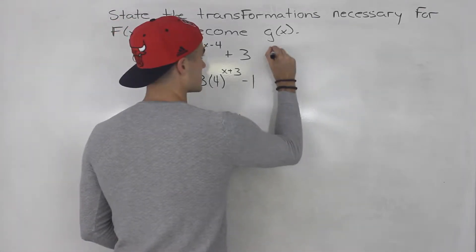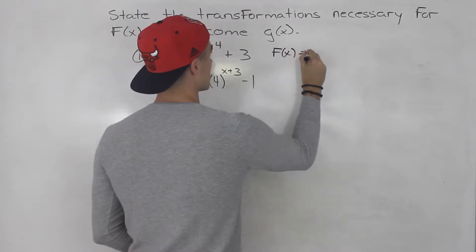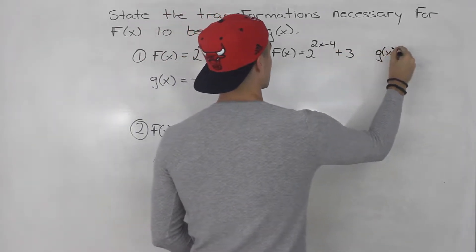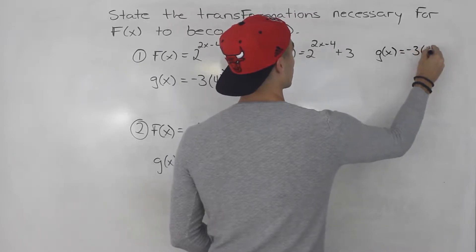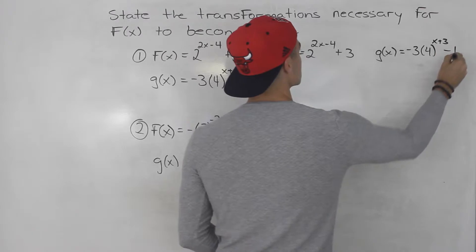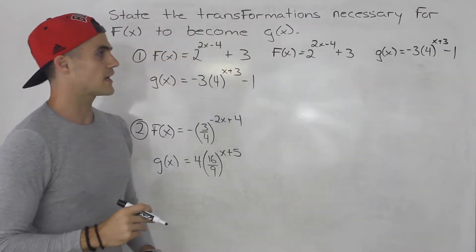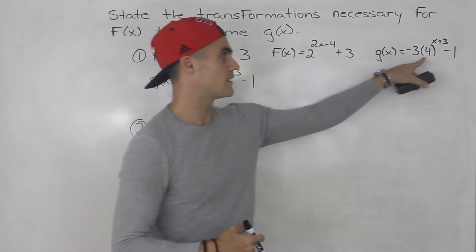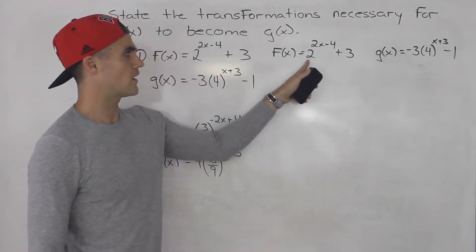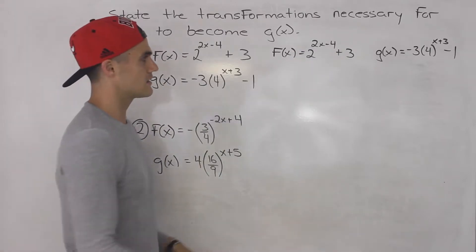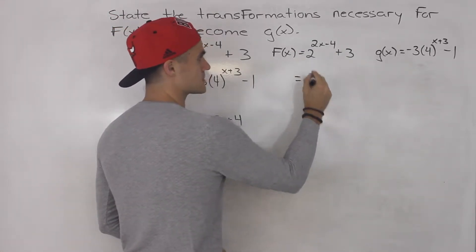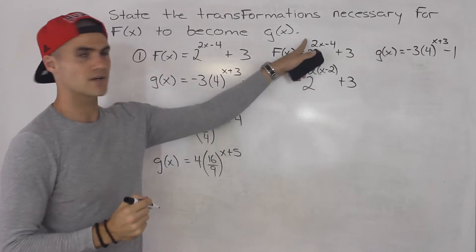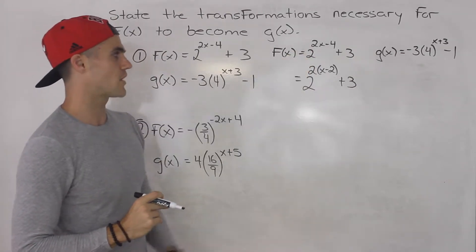What I'm going to do is rewrite these functions next to each other. We got 2 to the power of 2x minus 4 plus 3, and g of x is negative 3 bracket 4 to the power of x plus 3 minus 1. The first thing I like to do with these types of questions is try to make the bases the same if possible. This is a base of 2 and this is a base of 4. With f of x we can factor out a 2 in the exponent — we have this base of 2, then factor out a 2 and we'd be left with x minus 2. So this 2x minus 4 in the exponent I just changed to 2 bracket x minus 2.